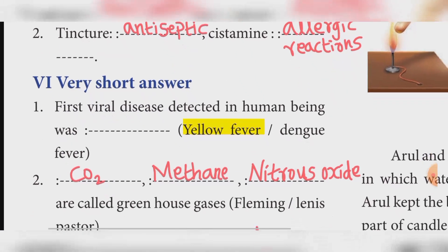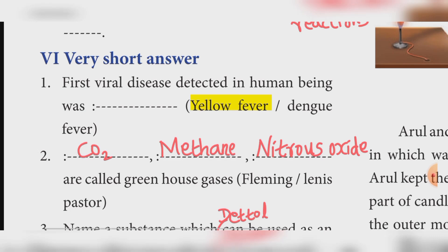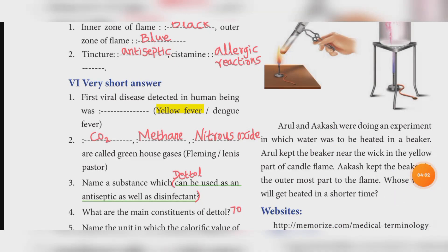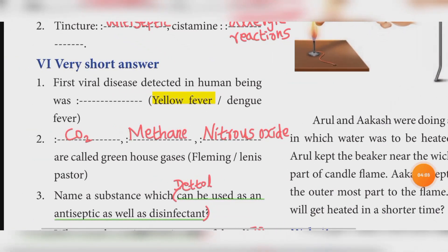Sixth section — Very short answers. First one: the first viral disease detected in human beings was — Answer: yellow fever. Second one: gases called greenhouse gases — Answer: CO2, methane, nitrous oxide.